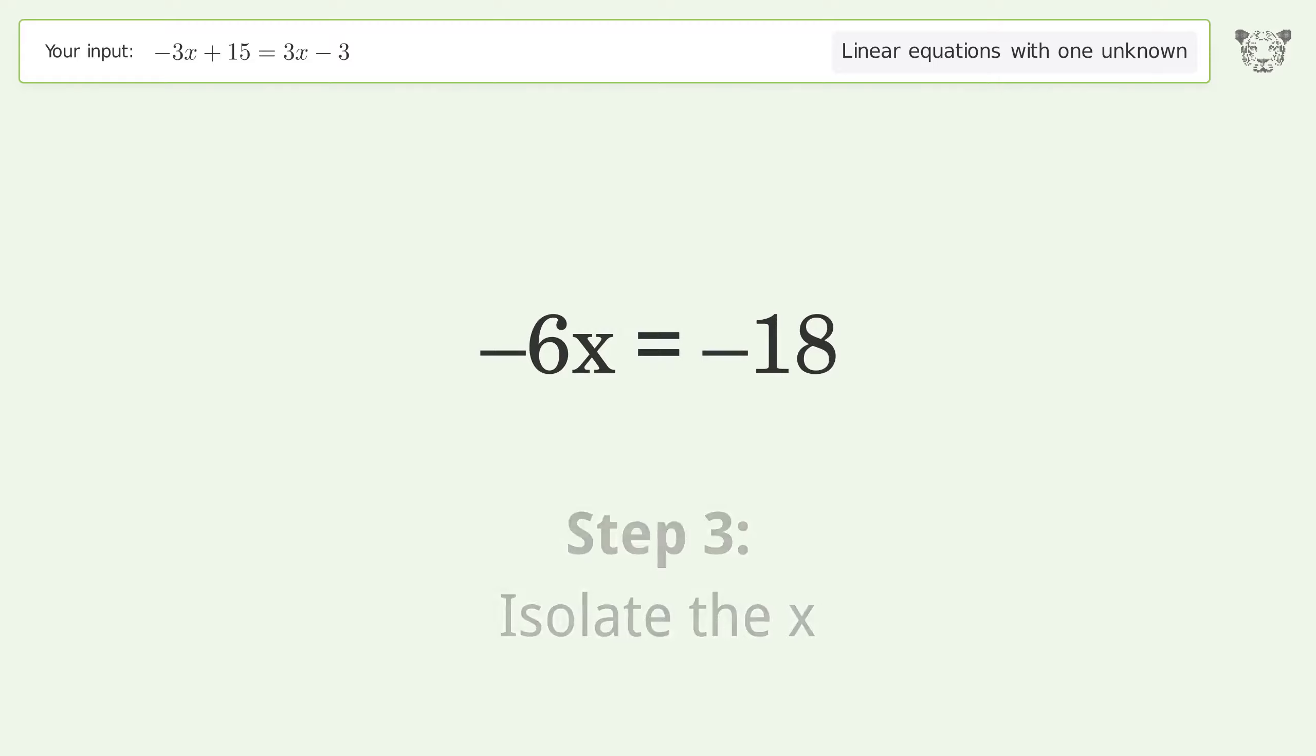Isolate the x. Divide both sides by negative 6. Cancel out the negatives. Simplify the fraction.